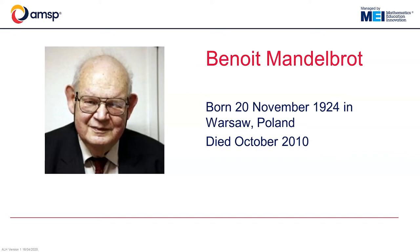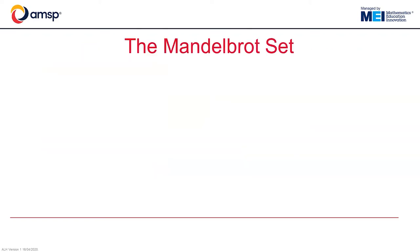Benoit Mandelbrot experimented with complex numbers. He played around with various equations using complex numbers and looked at the patterns in his answers. He let a complex number be c and tried c squared plus c. He put his answer into his calculator, squared it and added his original number. He repeated this many times.